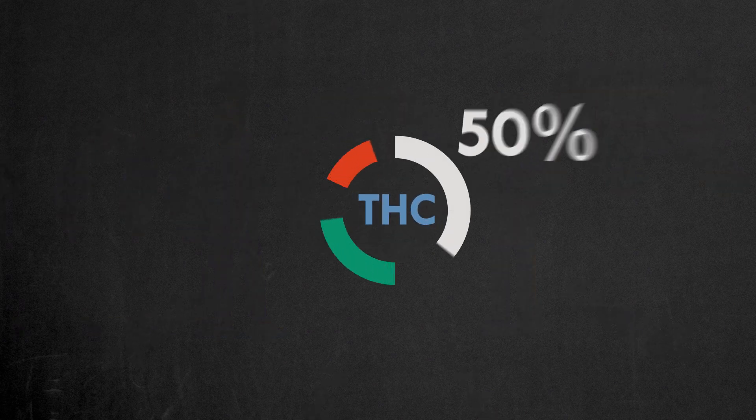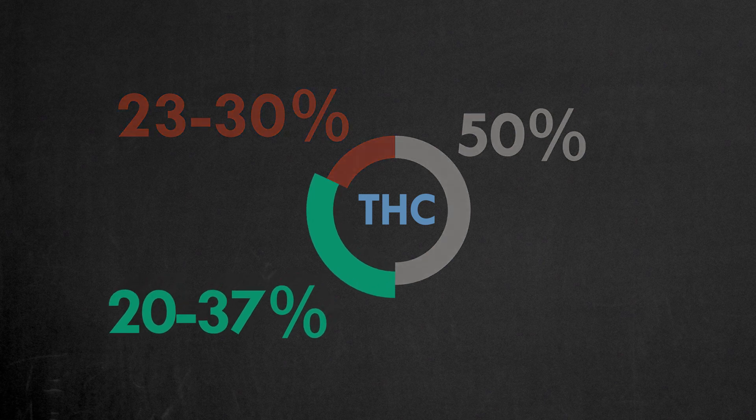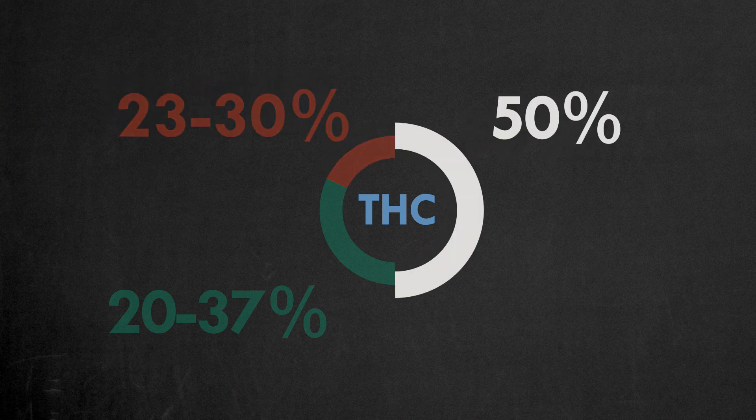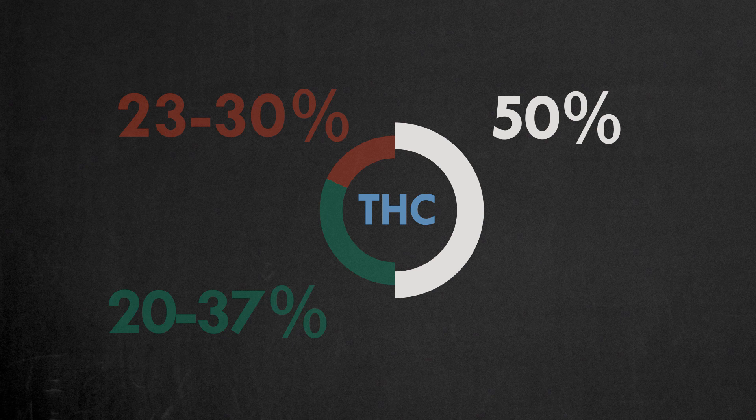The United States National Institute of Drug Abuse reports that only 20% to 37% of the THC is inhaled during smoking, 23% to 30% of the THC is destroyed through heating, and 40% to 50% of the THC is lost in the sidestream. This sidestream THC is what you can inhale as a second-hand smoker.